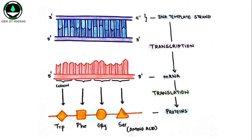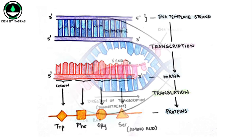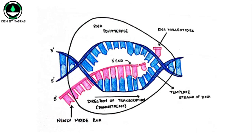Once an enzyme binds to the promoter, we are able to transcribe it. The AUGC nucleotides in RNA are complementary to the TACG bases in DNA.